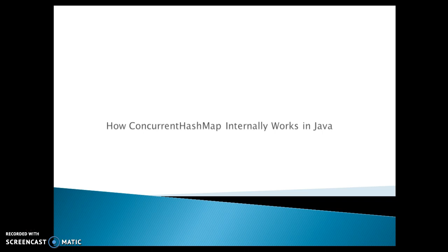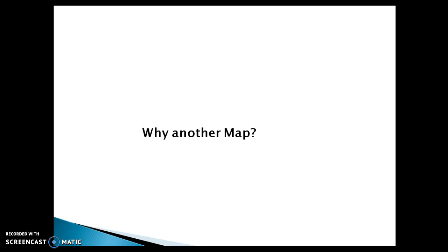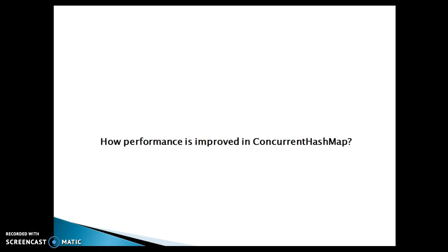ConcurrentHashMap in Java tries to address these issues. The question is: why another map? The first thing that comes to mind is why another map when we already have HashMap or HashTable. If a thread-safe data structure is required, the answer is better performance, while still providing a thread-safe alternative. So it can be said that ConcurrentHashMap is a HashMap whose operations are thread safe.